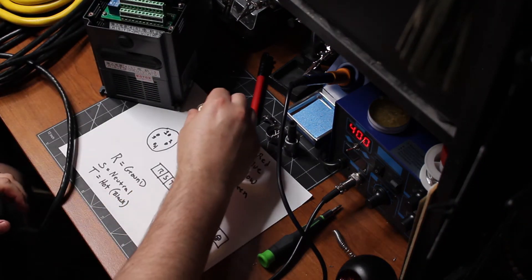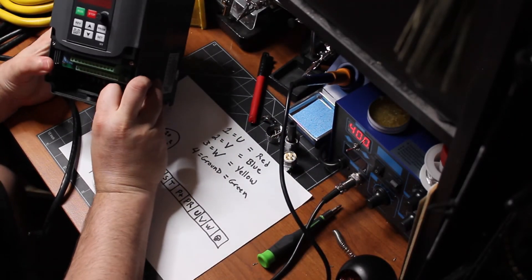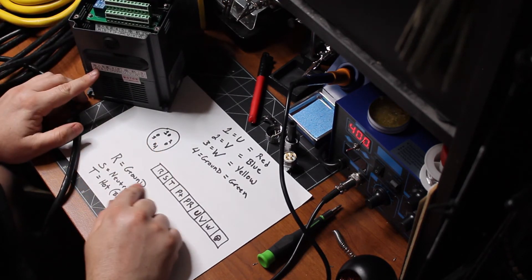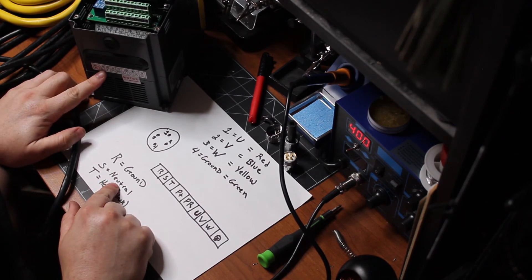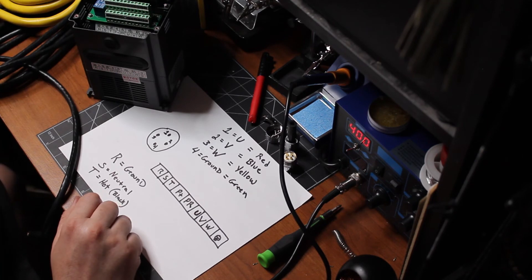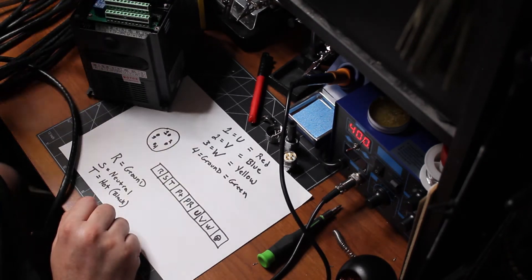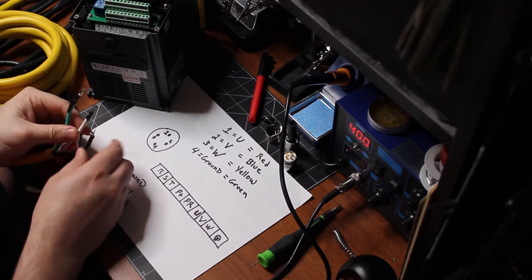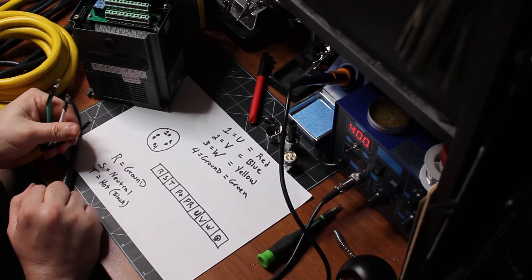Now, working to the other side, the R, S, and T. R is your ground. S is your neutral. And T is your hot. So, it would be like this. Green is ground. White is neutral. And black is hot.